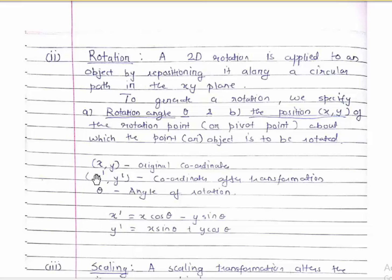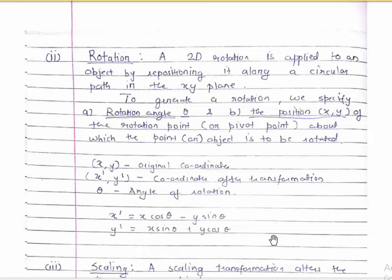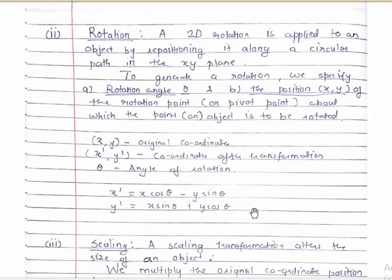x-dash and y-dash are the coordinates after transformation. x-dash equals x·cosθ minus y·sinθ, and y-dash equals x·sinθ plus y·cosθ. This might seem a little difficult to remember, but once we look at it in terms of matrices it will be very easy to remember.